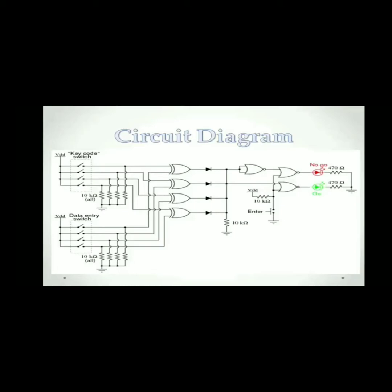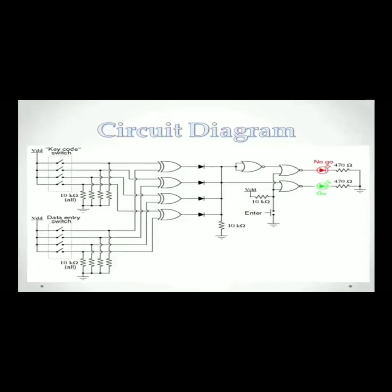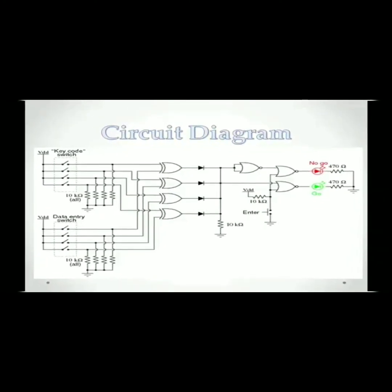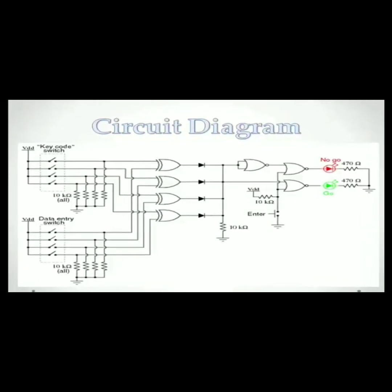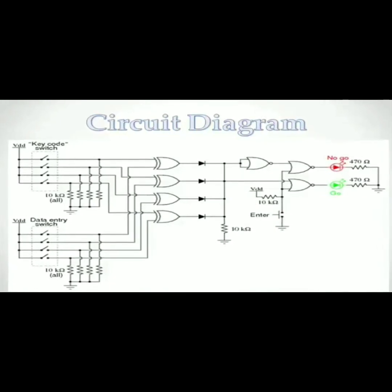We also connected a battery with the push button to power it up and also 10 kilo ohm resistor to protect it. One output of the NOR gate is connected with red LED and the output of the other NOR gate is connected with a green LED. Both of these LEDs are connected with 470 ohm resistors each. That's all about the circuit diagram. Thank you.